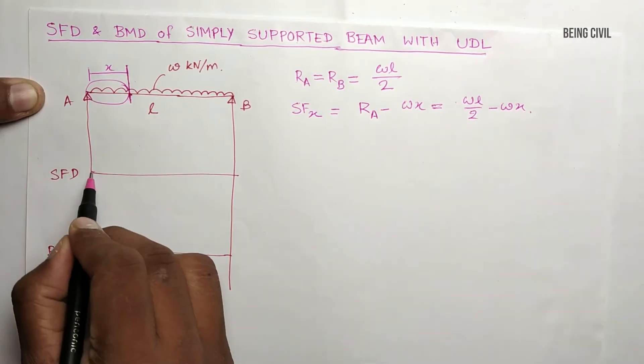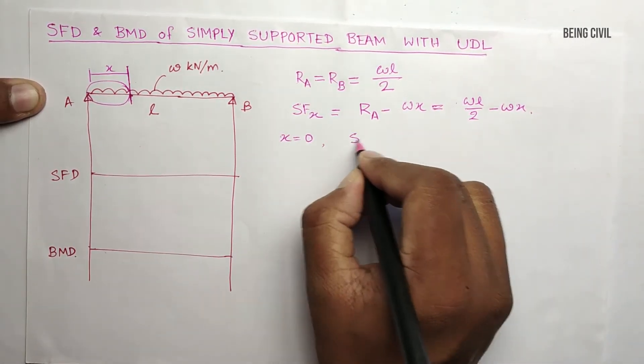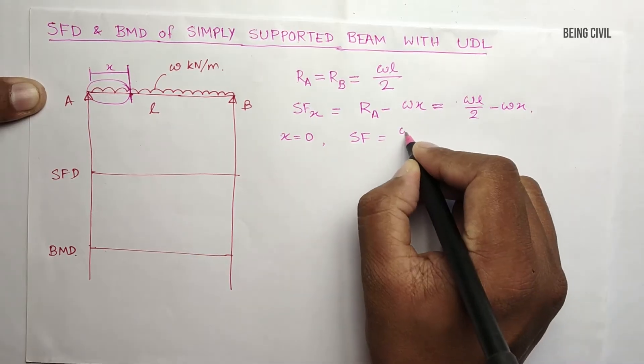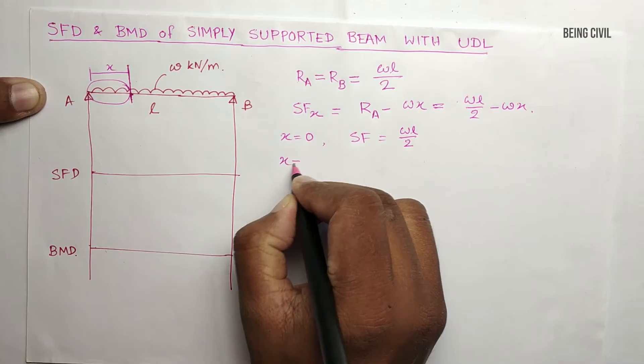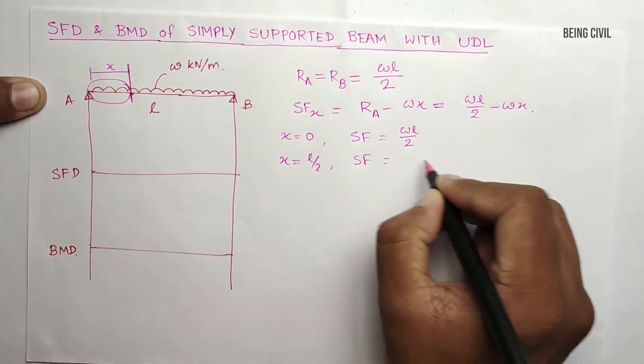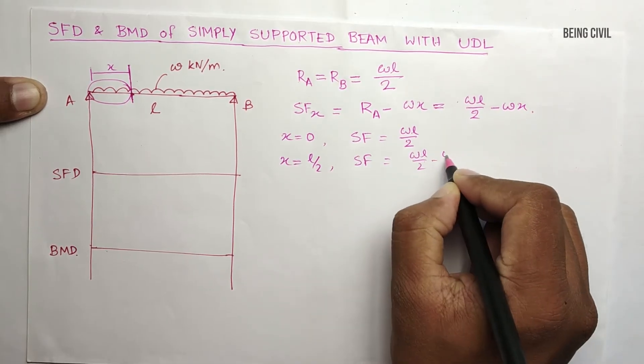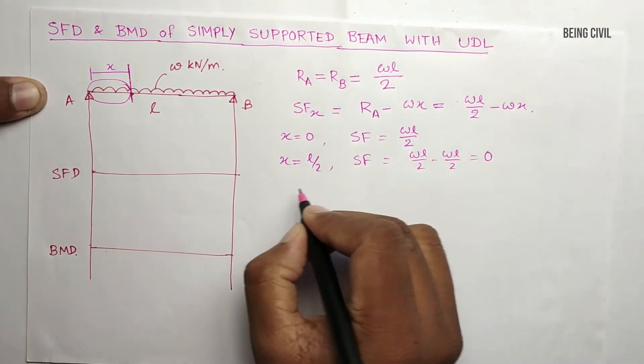At this point, when X is 0, shear force is WL by 2. At X equals L by 2, shear force will be WL by 2 minus WL by 2 equals 0.